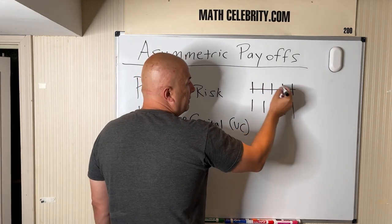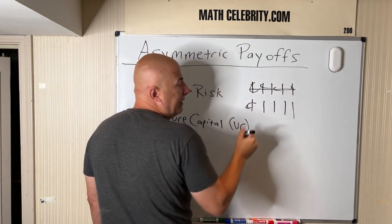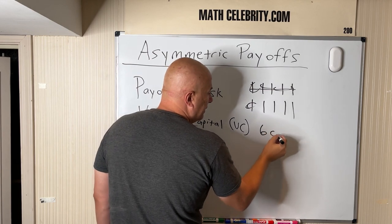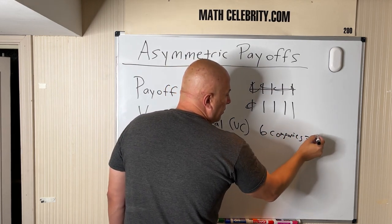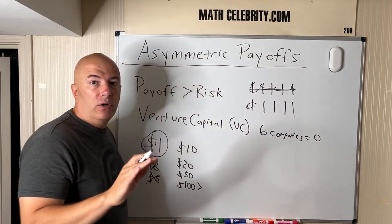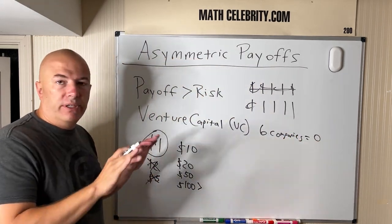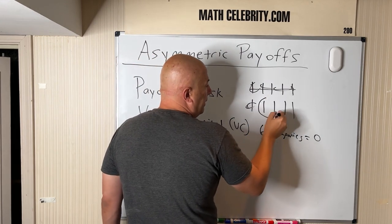Generally what happens is, and this baffles people how they make money, is six or seven of their bets make nothing. So six companies equal zero. They lose, they either go bust whatever, so their dollar is completely gone. Two of these companies